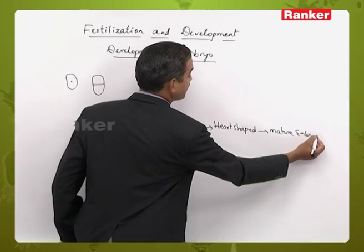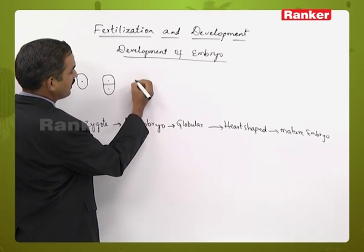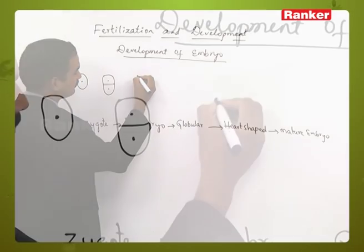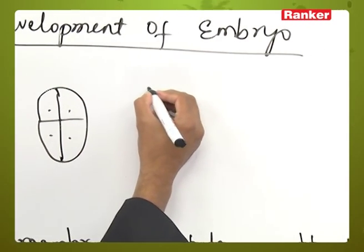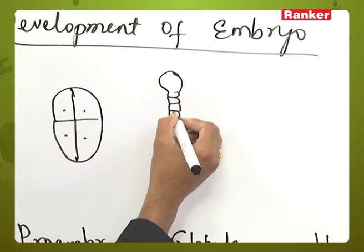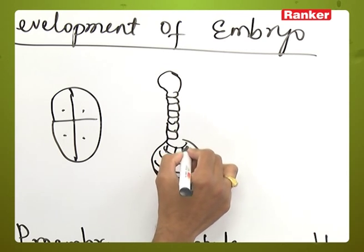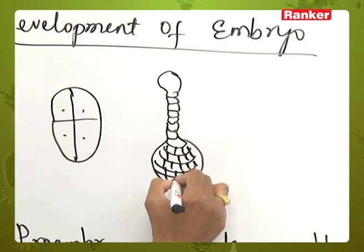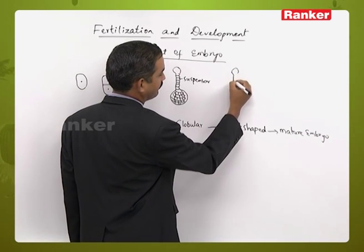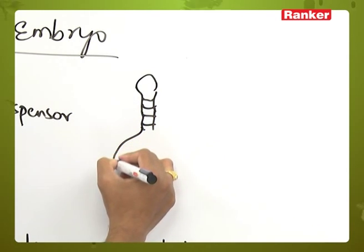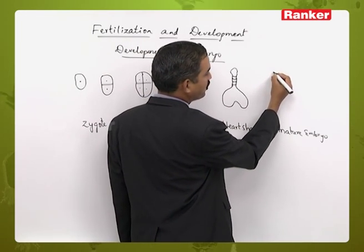So that is the change taking place in the structure from zygote to the mature embryo. A two-cell structure will be formed and gradually, by repeated divisions, it will be converted into a small globular structure which contains the suspensor. From the globular structure it is converted into a heart-shaped structure, and finally it is converted into a matured embryo.